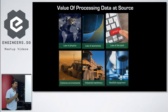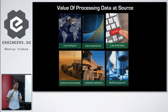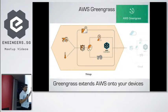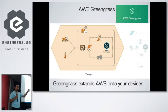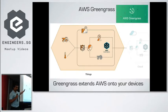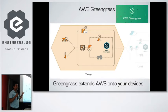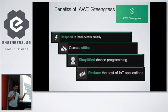Finally, the laws of the land — there may be privacy issues or government regulations requiring that data stays within the source location and doesn't go out. Based on these three laws — physics, economics, and land — you need to process data at the source, and AWS Greengrass satisfies all of these requirements. The architecture shifts from sensors sending data directly to the cloud, to sensors sending data to a local gateway with AWS Greengrass installed, which processes the data and takes action right at the source without needing to go to the cloud.